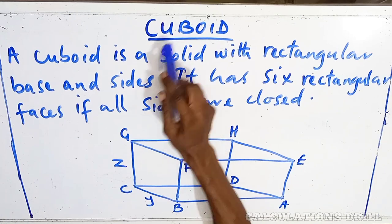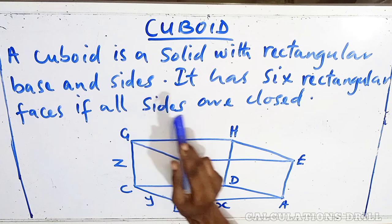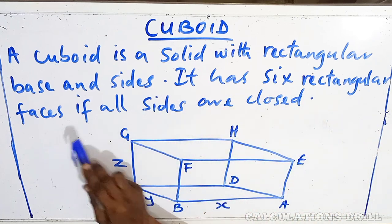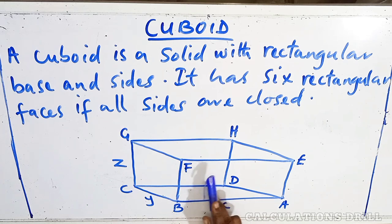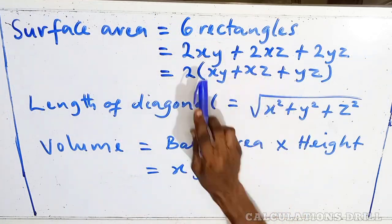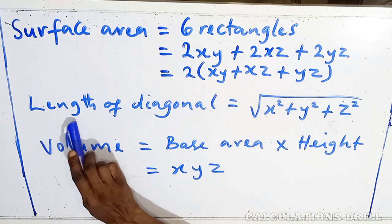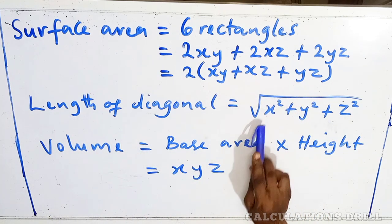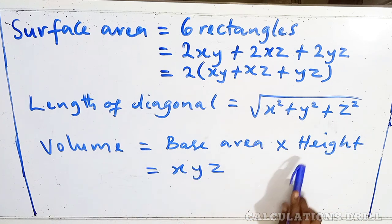The next one is the cuboid. A cuboid is a solid with a rectangular base and sides. It has 6 rectangular faces. If all sides are closed, the diagram, you can see it below. The formulas that we need to know: the surface area, the length of diagonal, and the volume. All these formulas are very important. We understand them.